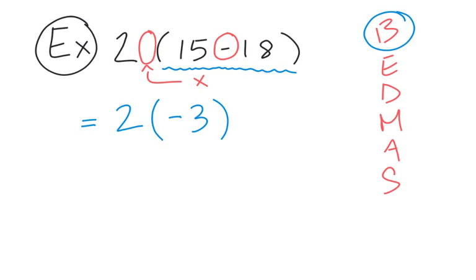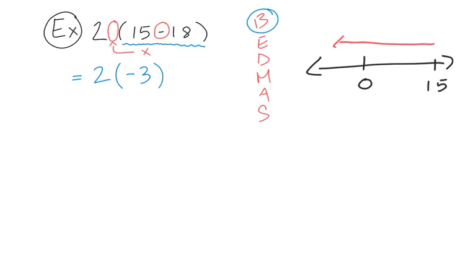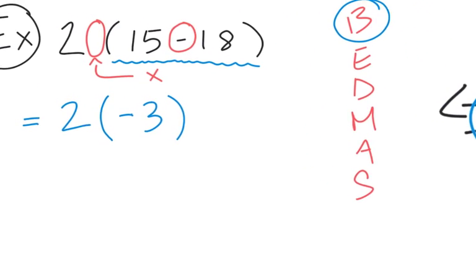If you're not sure about that, let me show you on a number line. We put zero somewhere in the middle, start with positive 15, and we are subtracting 18 from 15, which means we go further left on the number line and end up at negative 3.